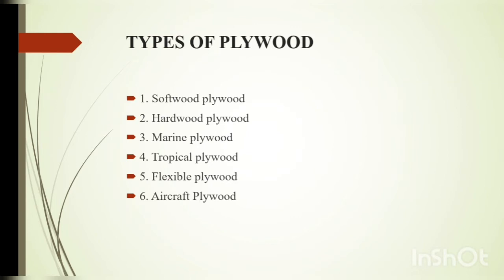Types of plywoods. They are mainly classified into six types: softwood plywood, hardwood plywood, marine plywood, tropical plywood, flexible plywood and aircraft plywood.